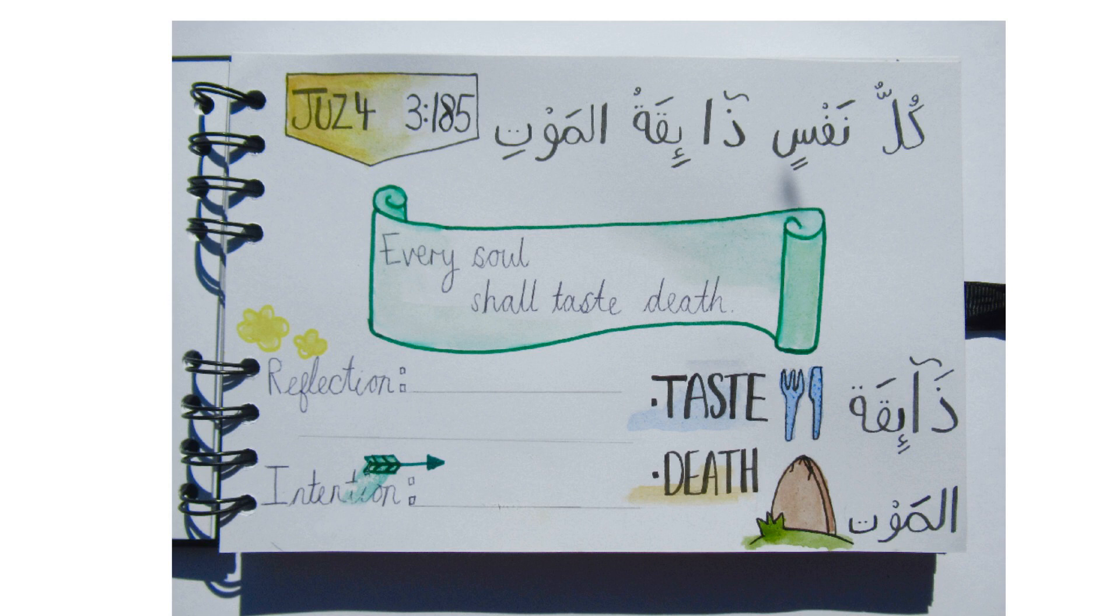Having little doodles helps us to remember the words better. You can choose any image that helps you. I've got a fork and knife for taste, and a headstone for malt.